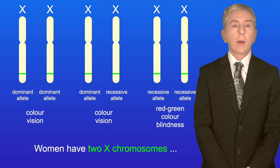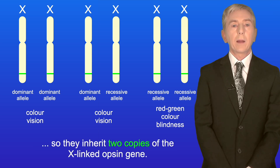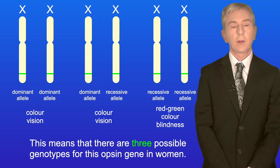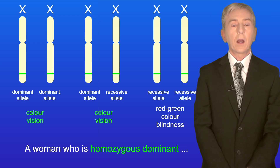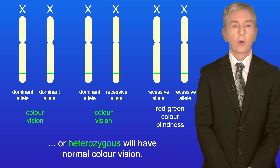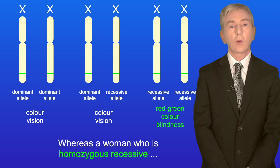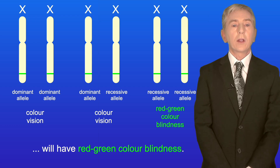Women have two X chromosomes, so they inherit two copies of the X-linked Opsin gene. This means that there are three possible genotypes for this Opsin gene in women. A woman who is homozygous dominant or heterozygous will have normal colour vision, whereas a woman who is homozygous recessive will have red-green colour blindness.